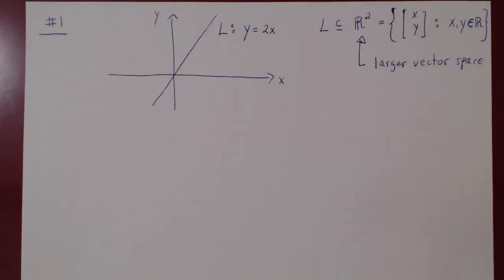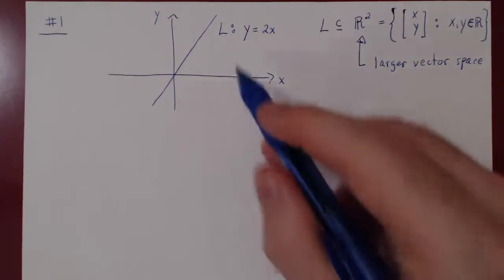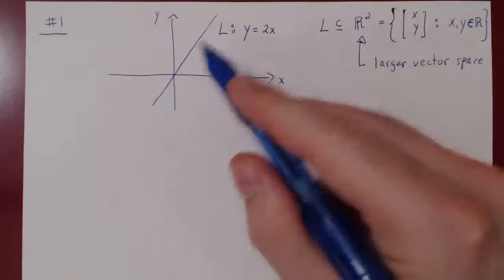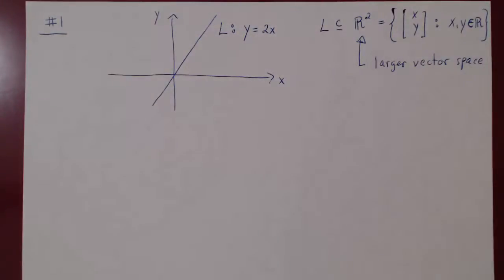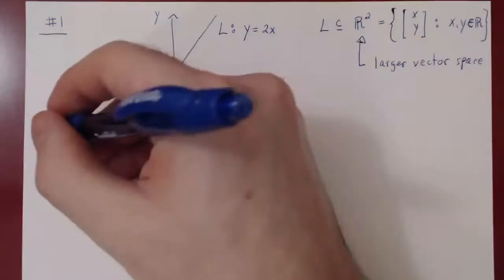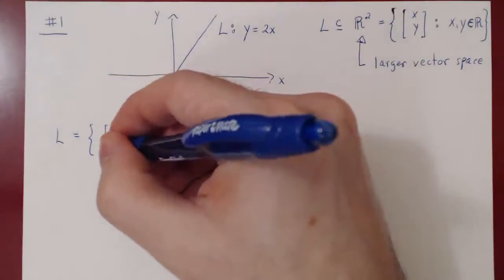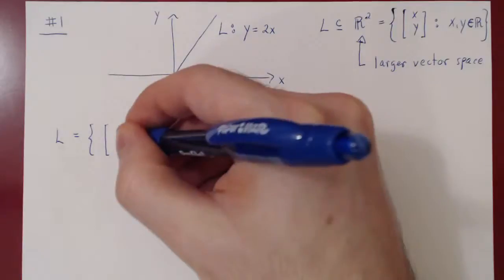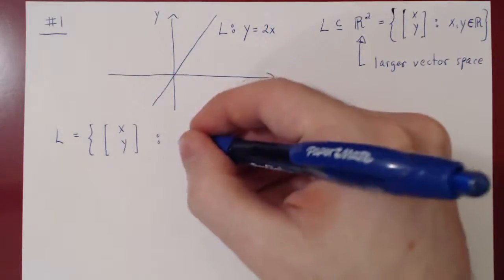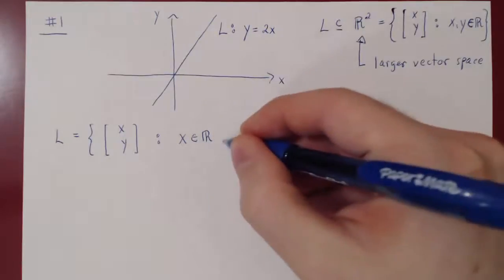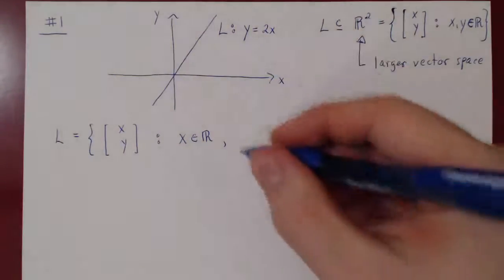We'll actually do something simpler in this case. If you remember the first corollary of the subspace theorem, it was to prove that the span of any vectors is always a vector space. So here's my question: can we express the line given by the equation y equals 2x as the span of something? The answer is yes. Think of the line as the set of points (x, y) in the plane, where x can be any real number and y has to be 2 times x.